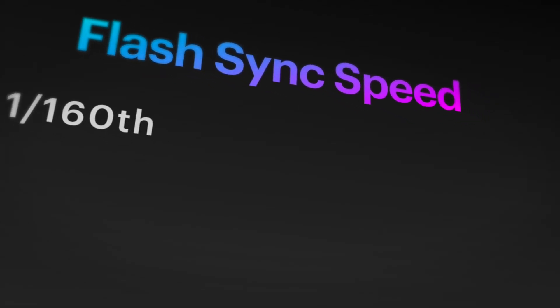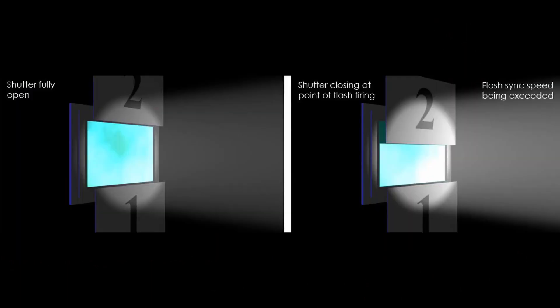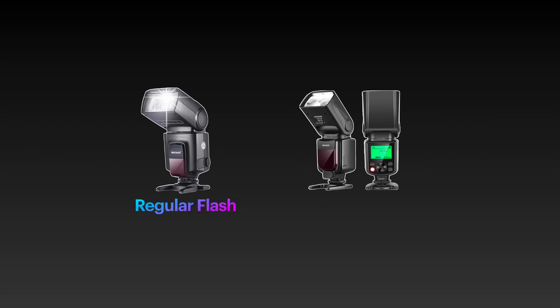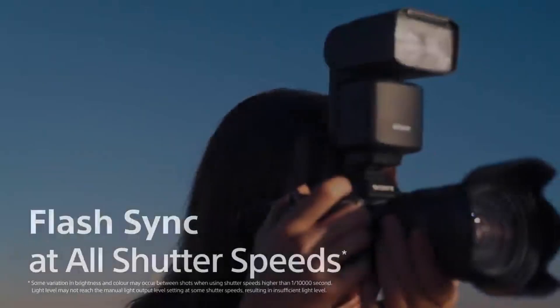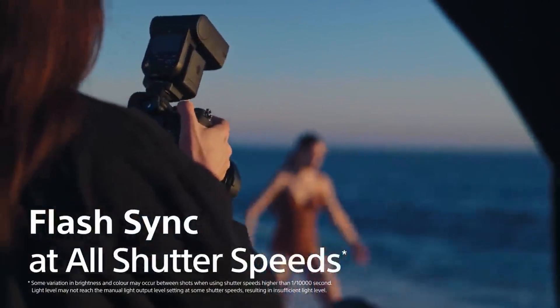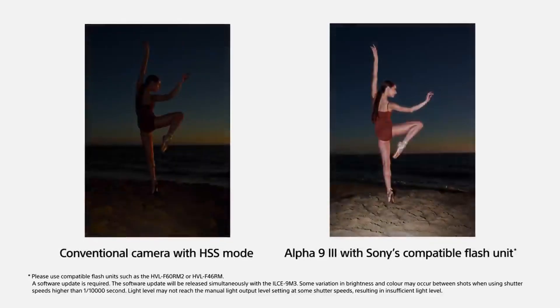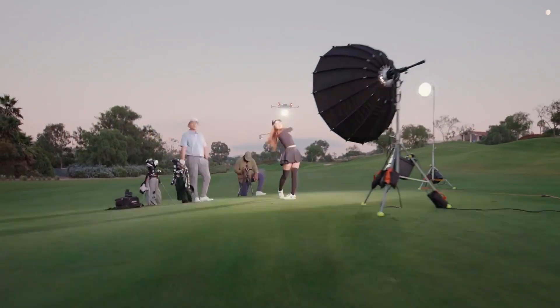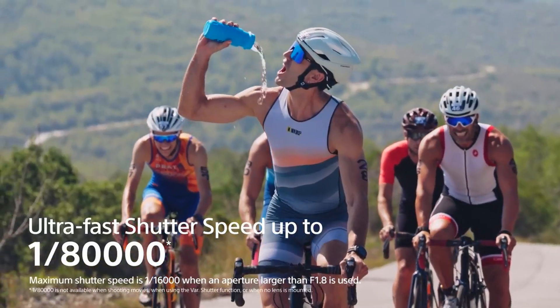Traditional rolling shutter cameras have a sync speed limitation when using an external flash — you cannot exceed a certain shutter speed. In some cameras that limit is 1/60th of a second, in others 1/250 or 1/350. Once you pass the sync limit you'll see black banding in photos, showing your speedlight and camera are out of sync. To fix this, HSS (high speed sync) speedlights exist but they're expensive. Since the A9 III uses a global electronic shutter, these limitations are a thing of the past — you can use flash at any shutter speed, all the way up to the maximum of 1/80,000th of a second.